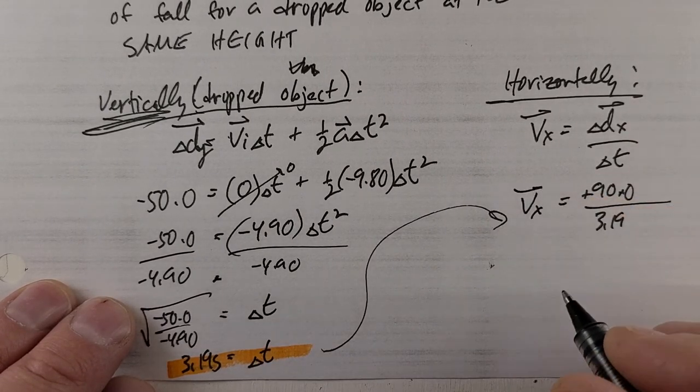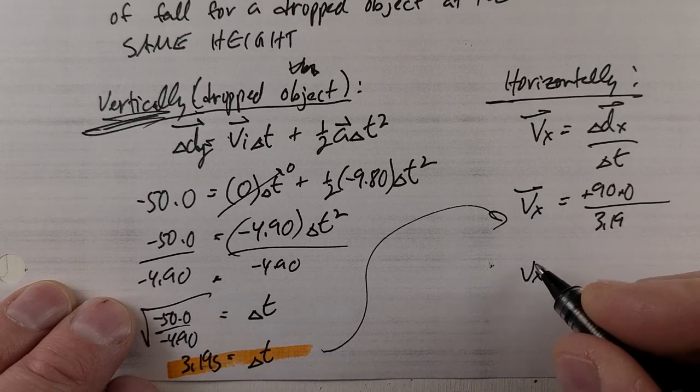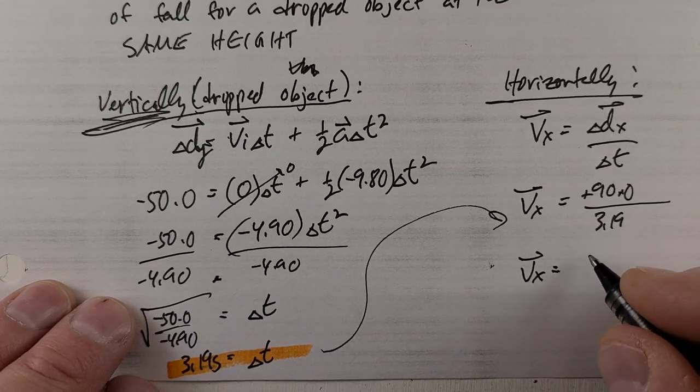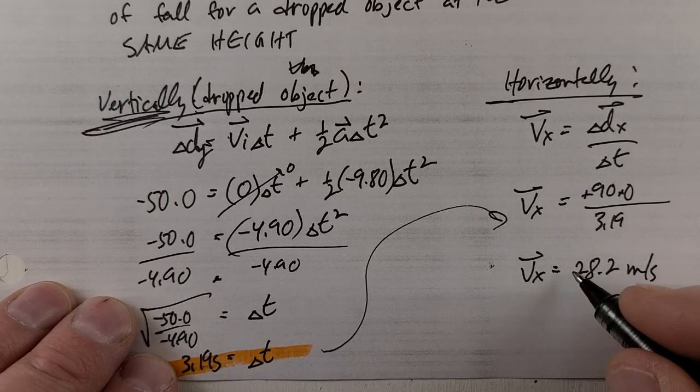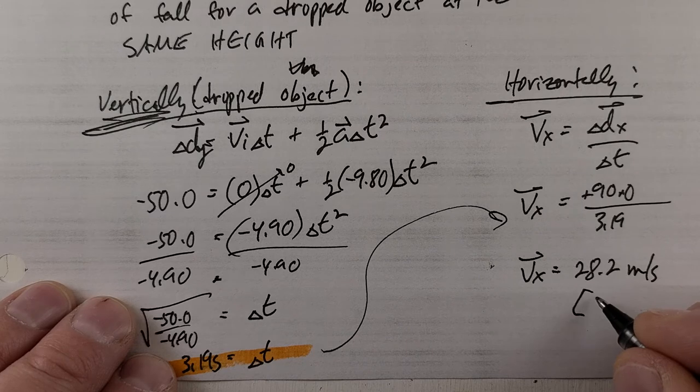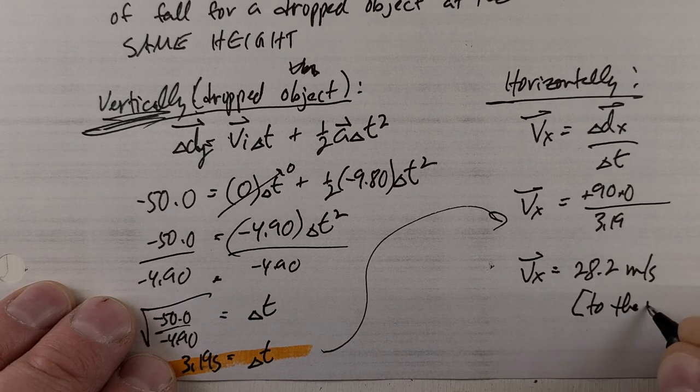So I can figure out my horizontal velocity, which is constant throughout, and that's going to be 28.2 meters per second. I could put positive here or I could say 'to the right'—it doesn't matter as long as you have some direction there.